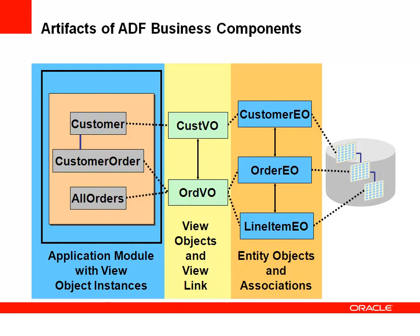The next layer is composed of view objects, which represent sets of data that you interact with — either updatable or non-updatable views. View objects can also be related to one another using view links. The last layer is called the application module, which exposes the interface the user interface designer will interact with, handles the connection to the database and transaction management, and exposes a specific data model comprised of view objects, view links, and service methods.